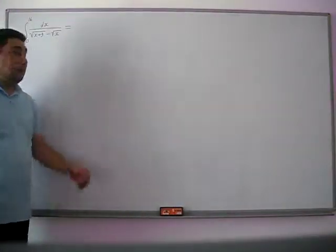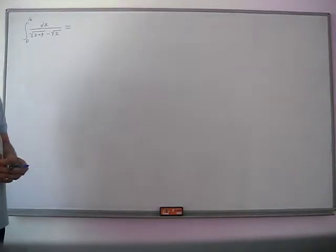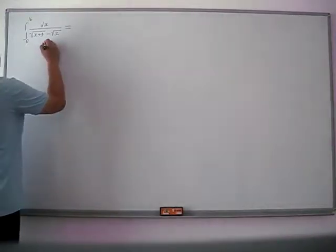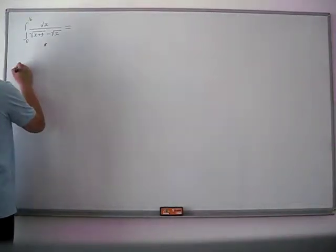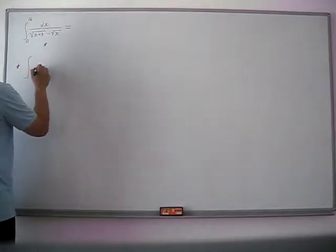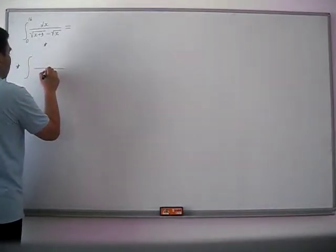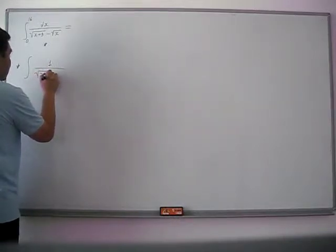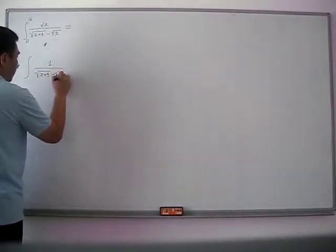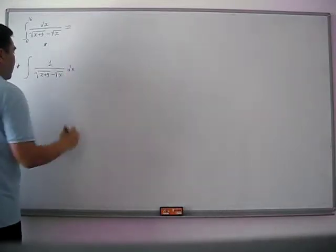Let's evaluate this definite integral. Step one, we need to first solve our indefinite integral. So our indefinite integral is 1 over the quantity square root of (x+9) minus square root of x, dx.